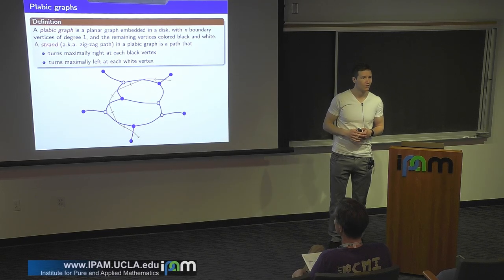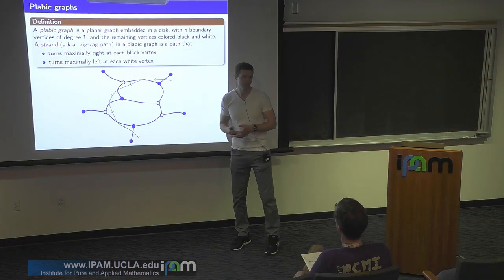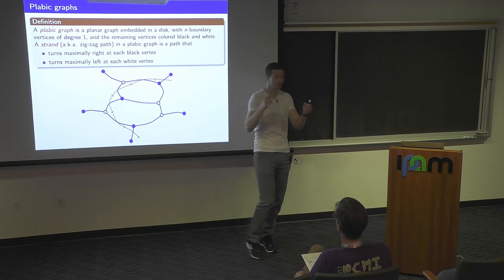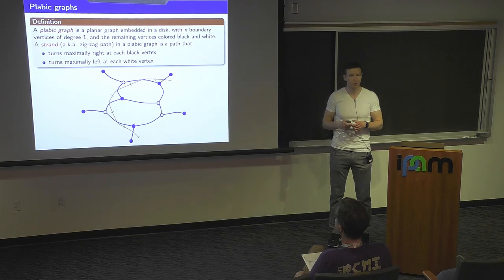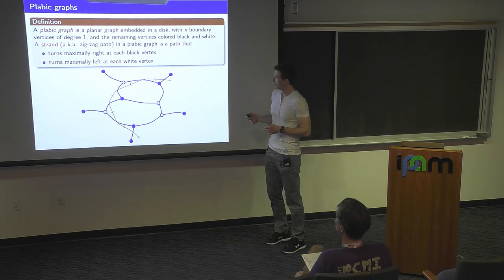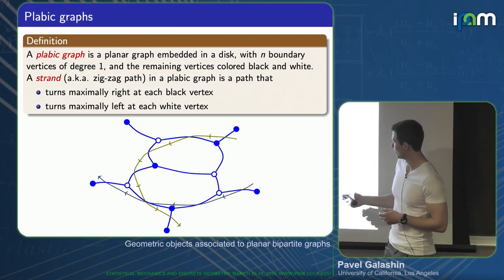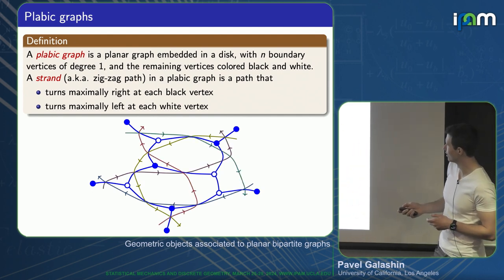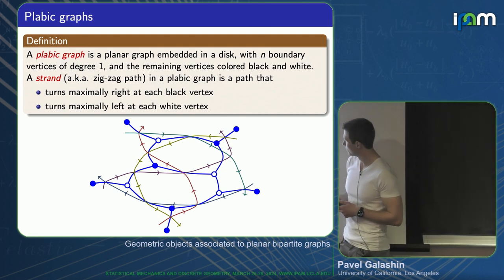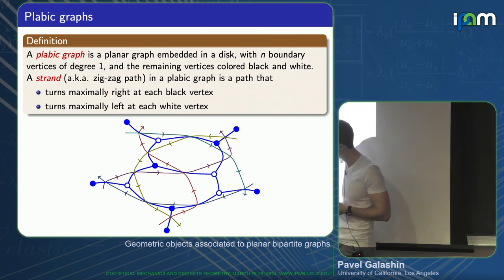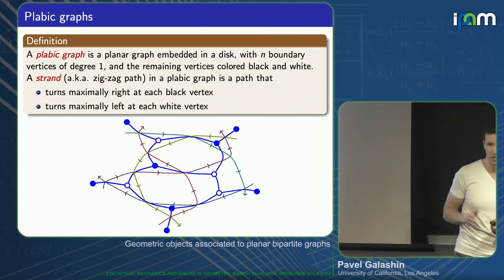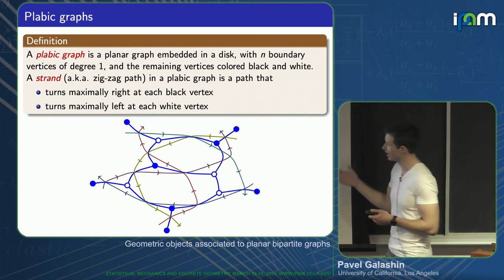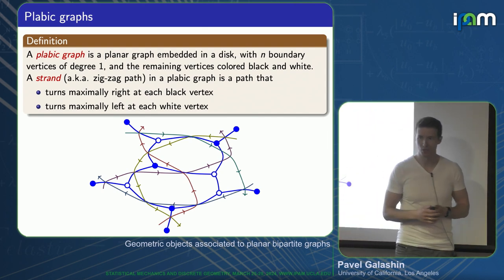I chose this picture to have trivalent interior vertices because it's going to be important later. For now, it doesn't matter — you can contract unicolored edges and get the bipartite graph; that's another way to think of this. If a strand starts at the boundary, it has to terminate at the boundary. Sometimes you may have closed strands inside the disk, but every edge belongs to two strands which go in the opposite direction.